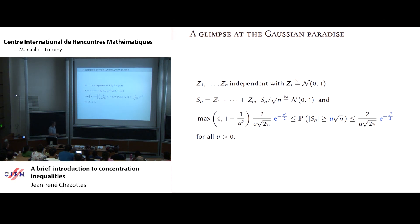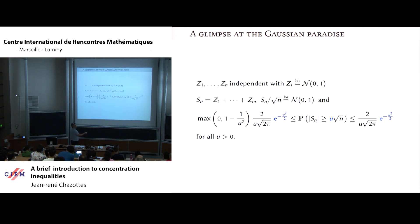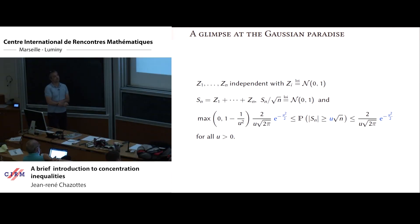For Gaussian variables, there is a classical sandwich bound: the probability that the absolute value of S_n is bigger than u times square root of n is bounded above by a quantity involving 1/u times the Gaussian tail — which decays slowly compared to the exponential — and you also have a lower bound of the same form. Forgetting about the prefactor, this is the best behavior you can imagine. Now let's leave this paradise.